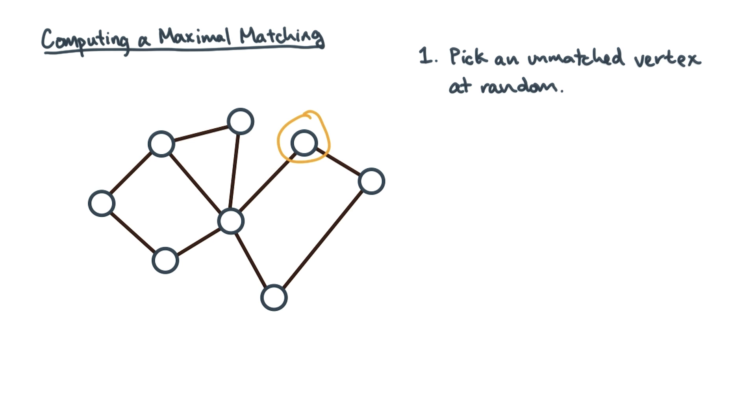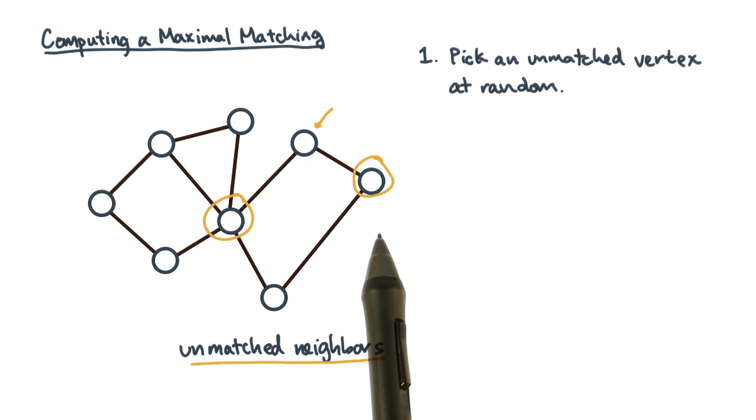Next, you'll match this vertex to one of its unmatched neighbors. Again, since we're just starting, all of the neighbors are unmatched. So how do we pick one? There are lots of strategies. For example, you could just pick one at random.